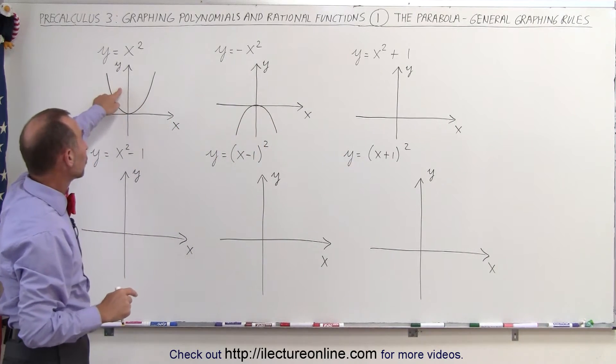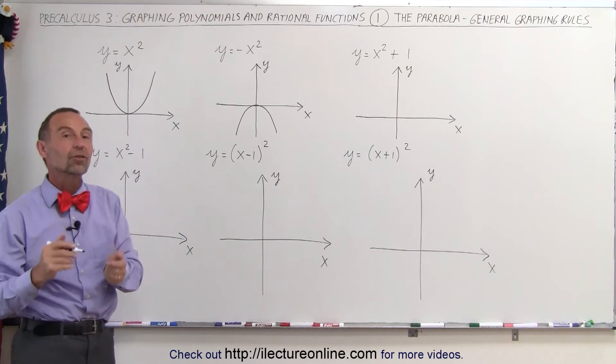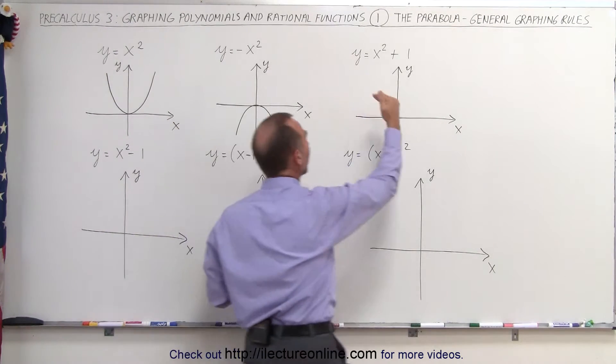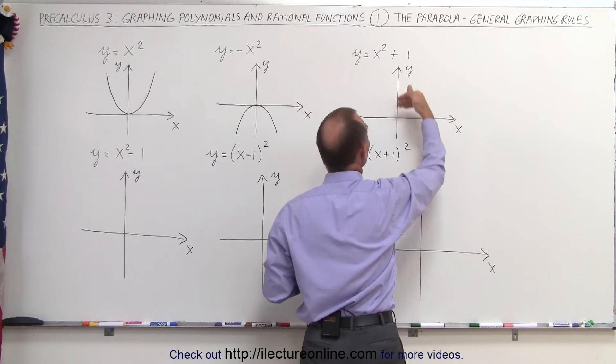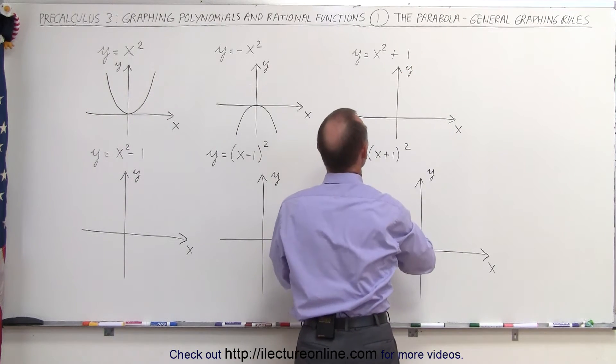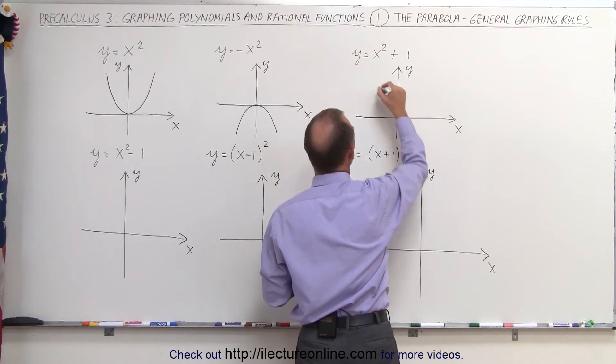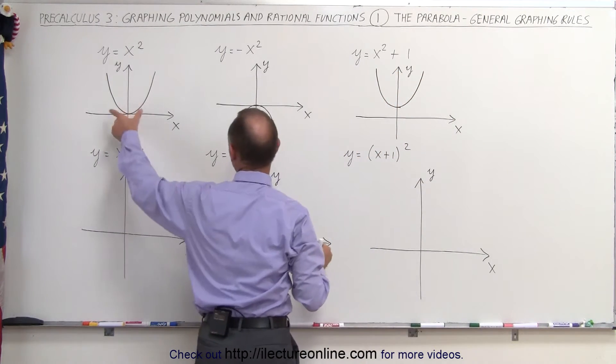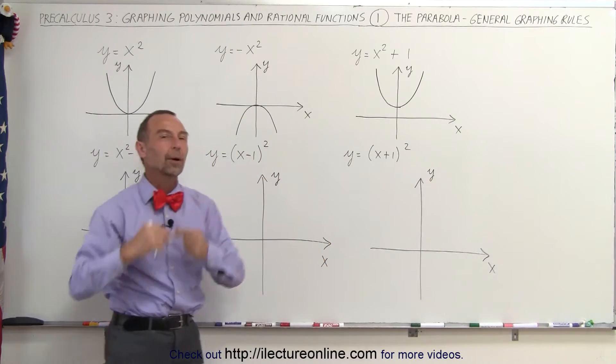If we take the original function, y equals x squared, and we add a constant to it, it simply raises the graph by that constant. So if we add plus 1, it simply raises it up by 1. If we add plus 2, it raises up by 2. In this case, we find y equals 1, and now the new parabola will look like this with the vertex at y equals 1. So it simply takes the function and raises it up by 1.